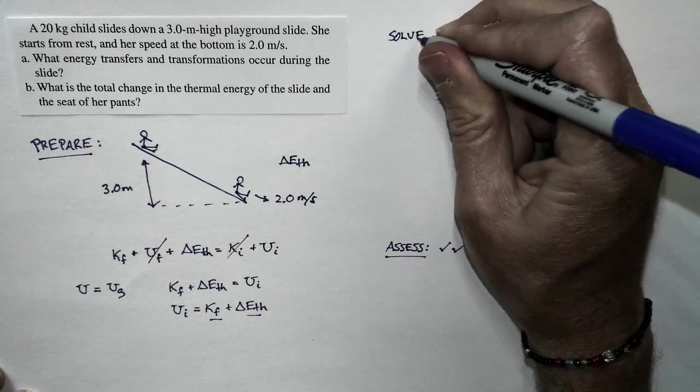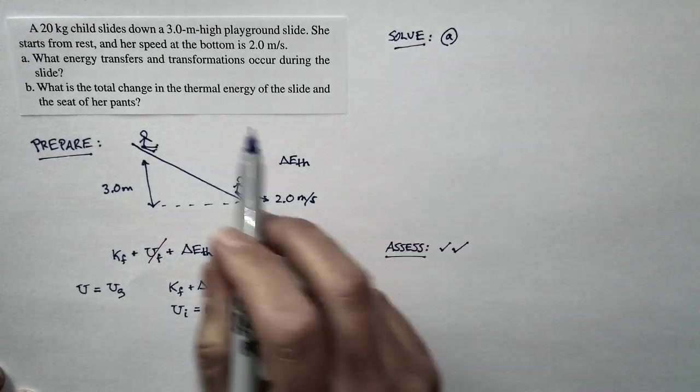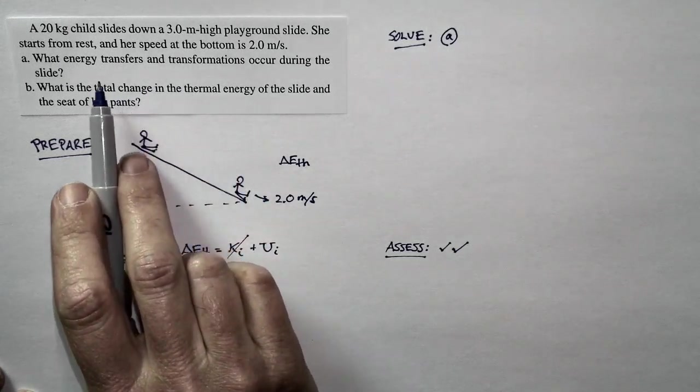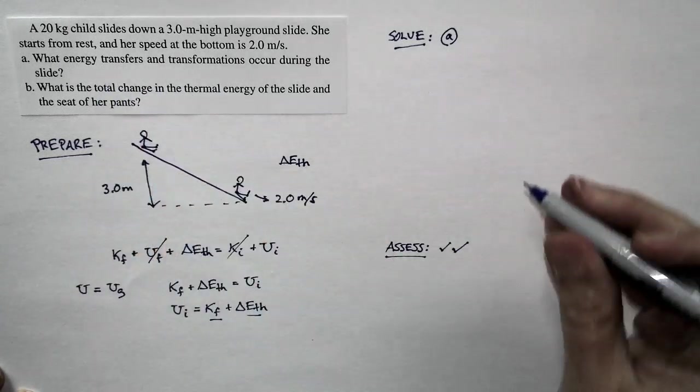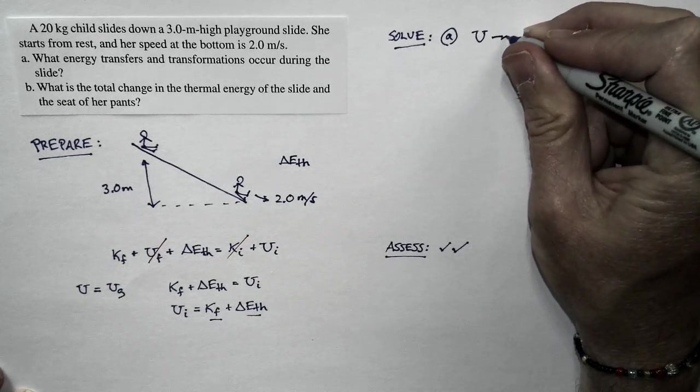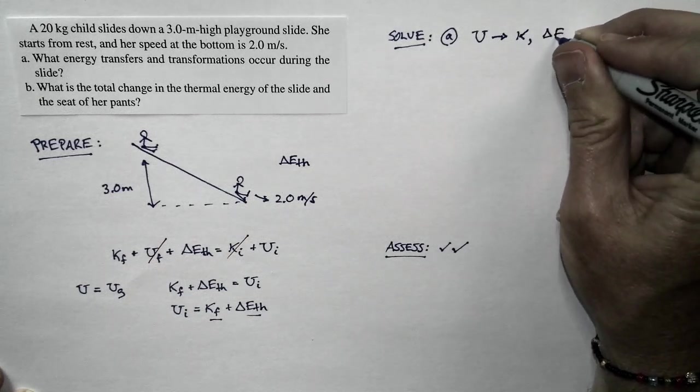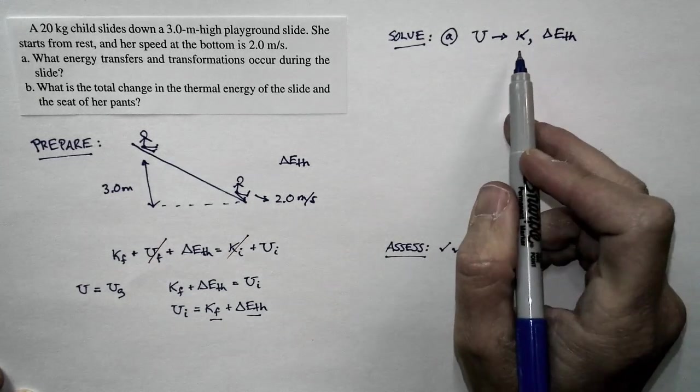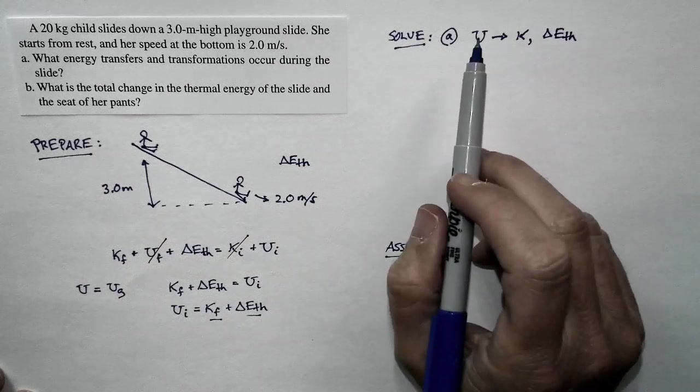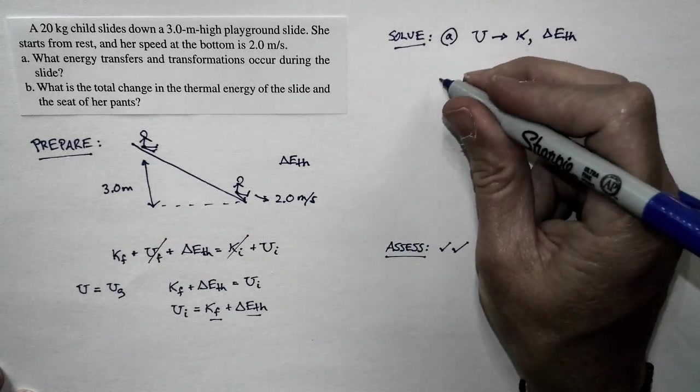So let's do a solution. The first part is basically just to recall what we said. When energy transfers and transformations occur in the slide, she loses potential energy. And her potential energy turns into kinetic energy and thermal energy. So she's losing potential energy, increasing kinetic energy. The potential energy is transformed into these two forms.